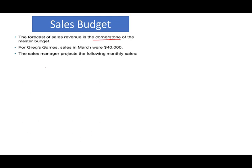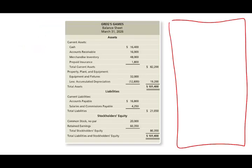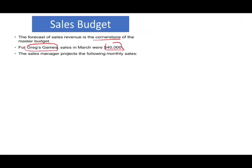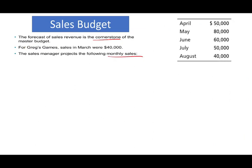We're dealing with this company, Greg's Games. Their sales in March were $40,000 — and we need this number to project other numbers. The sales manager projects the following monthly sales: April $50,000, May $80,000, June $60,000, July $50,000, and August $40,000.